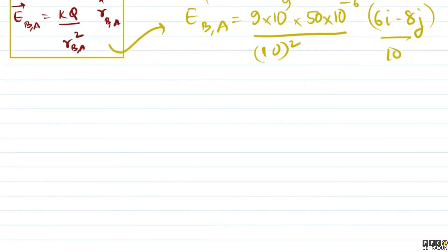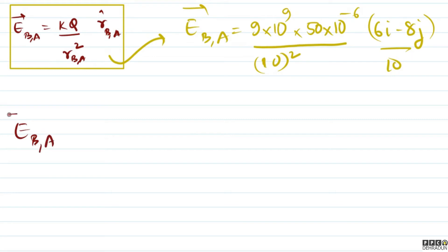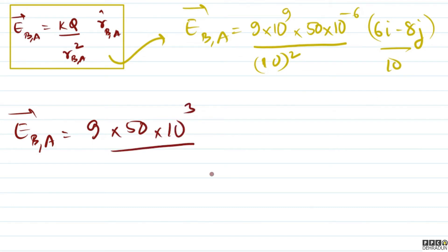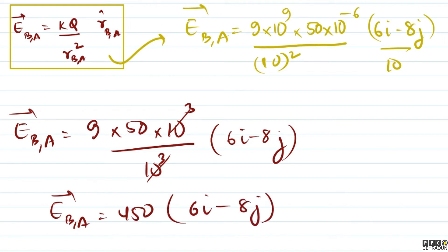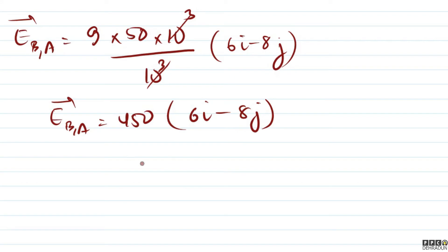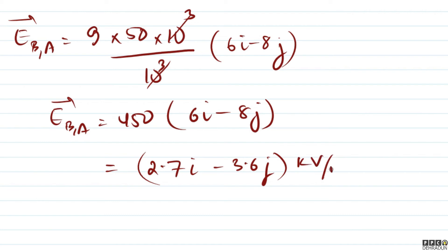Let's simplify this. The electric field at B because of A becomes: 9 into 50 into 10 to the power 3 upon 10 to the power... simplifying further, it becomes 450 multiplied by (6i cap minus 8j cap). After further simplification this gives us 2.7i cap minus 3.6j cap, and the unit will be kilo volts per meter.